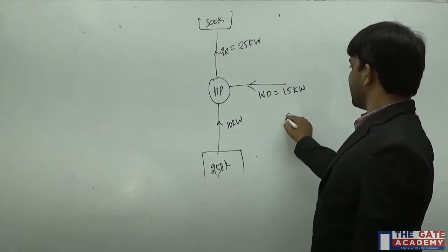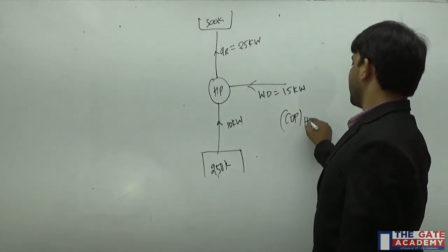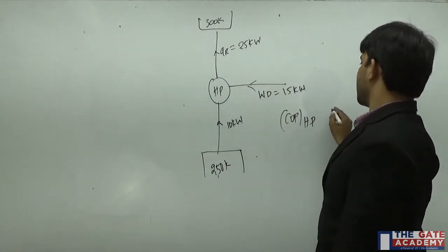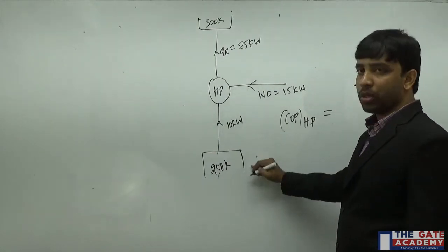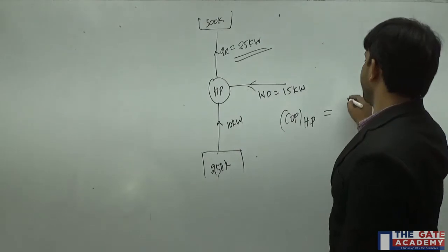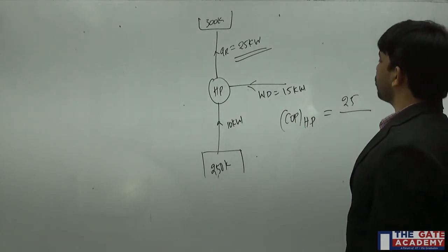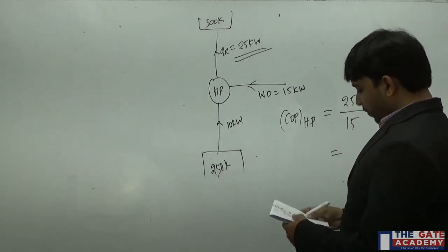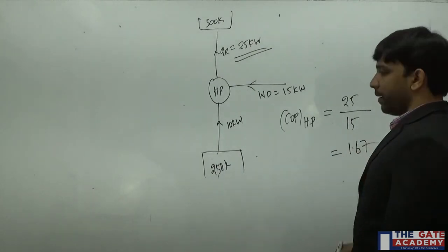Since it is a heat pump, for heat pump the desired effect is heat rejection. COP is desired effect divided by the work done. Heat rejection to higher temperature is 25 and work done is 15.